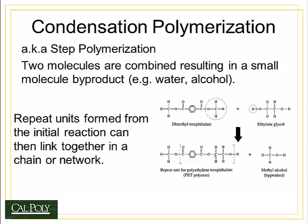The second type of polymerization is called condensation polymerization, or step polymerization. Two molecules are combined and importantly, they result in a small molecule byproduct — often water or an alcohol. For example, dimethyl terephthalate and ethylene glycol are bonded together, where the hydrogen in the ethylene glycol bonds with the methyl alcohol group in the dimethyl terephthalate, forming methyl alcohol as a byproduct. The product actually produced is the combination of the terephthalate molecule and the ethylene glycol molecule.